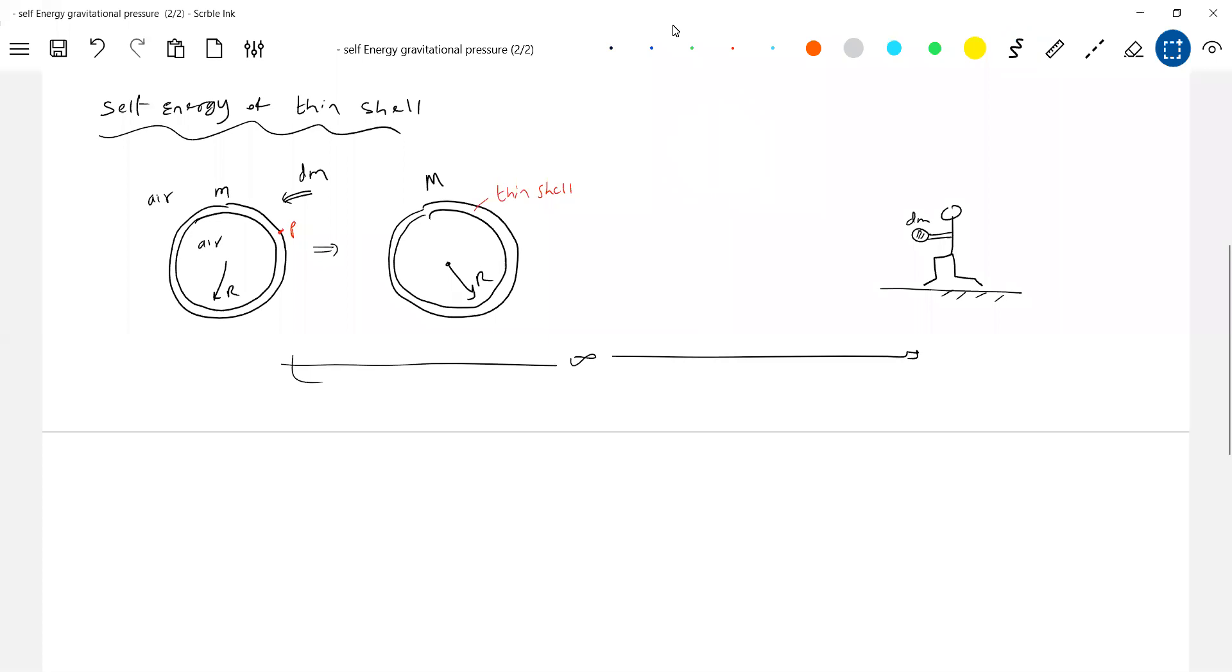Okay, how to do this? How to find out that self energy of the shell? One problem is we don't have gravitational energy density. So there is no other way, we should take help of the basic mathematics here. Work done by an external agent in moving a mass from one point to another point.